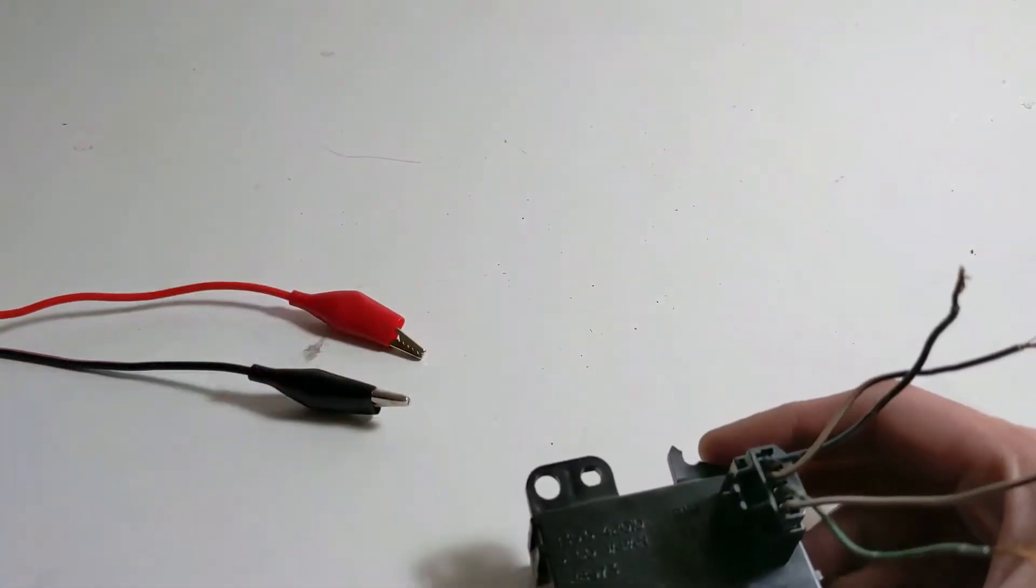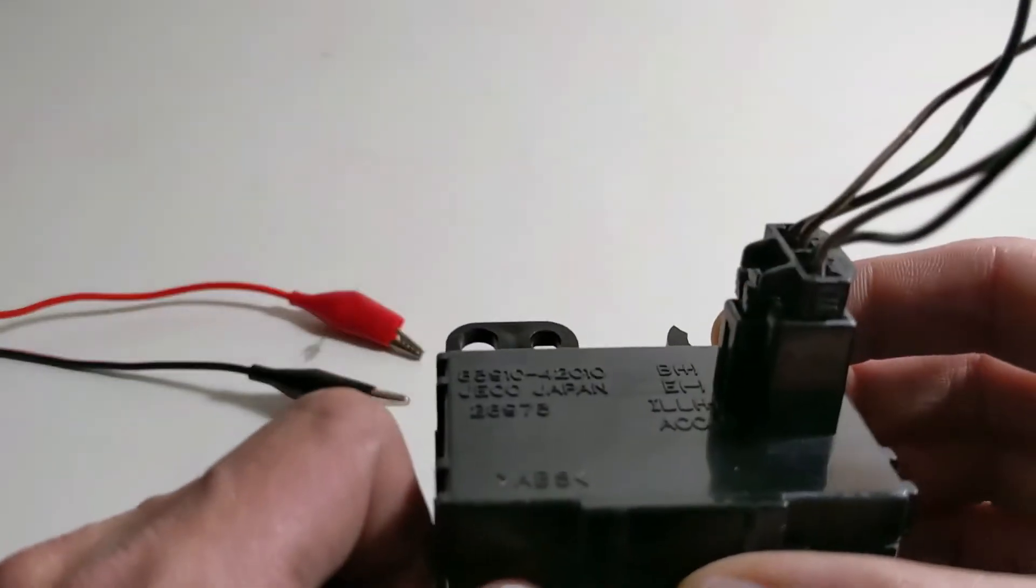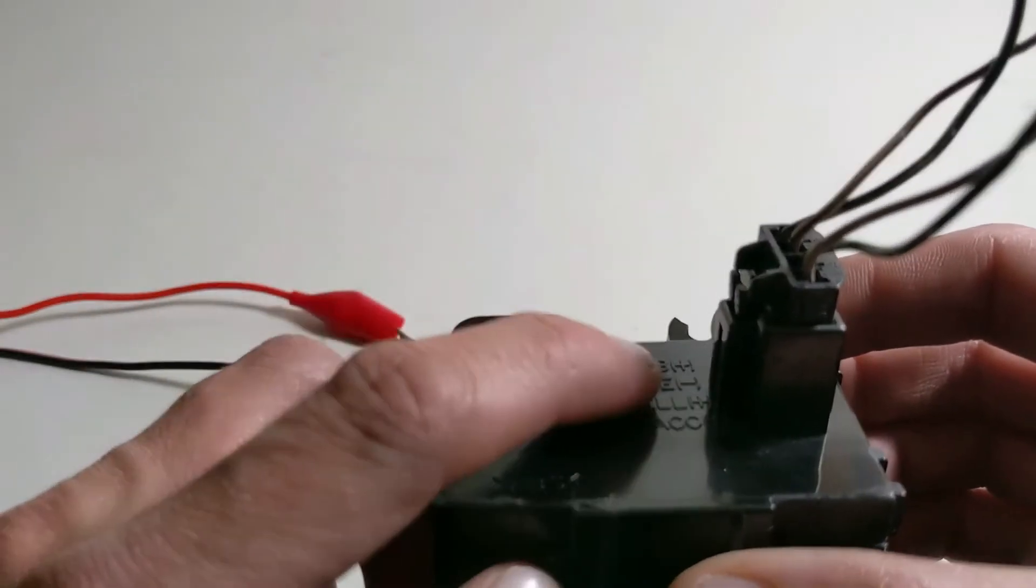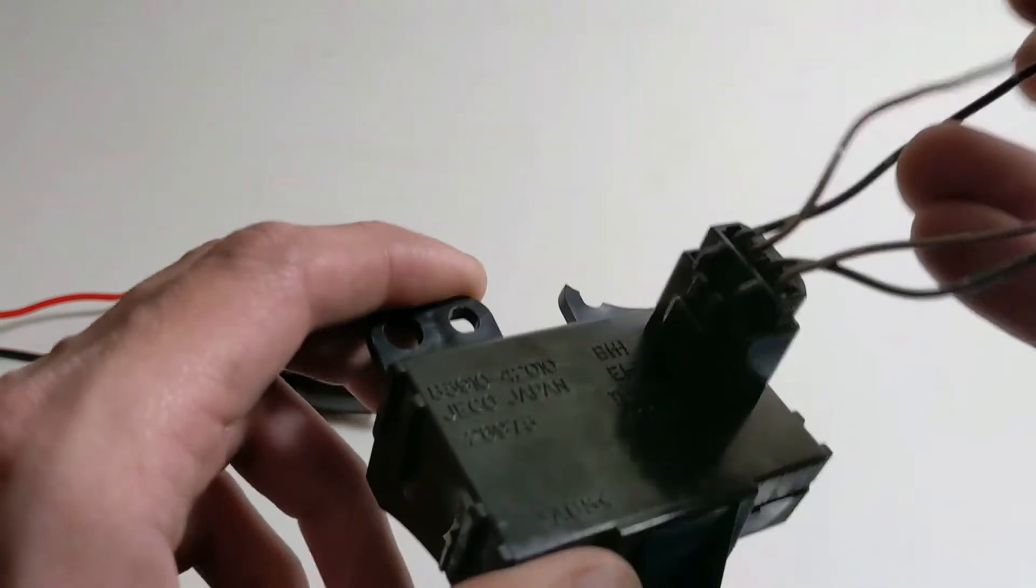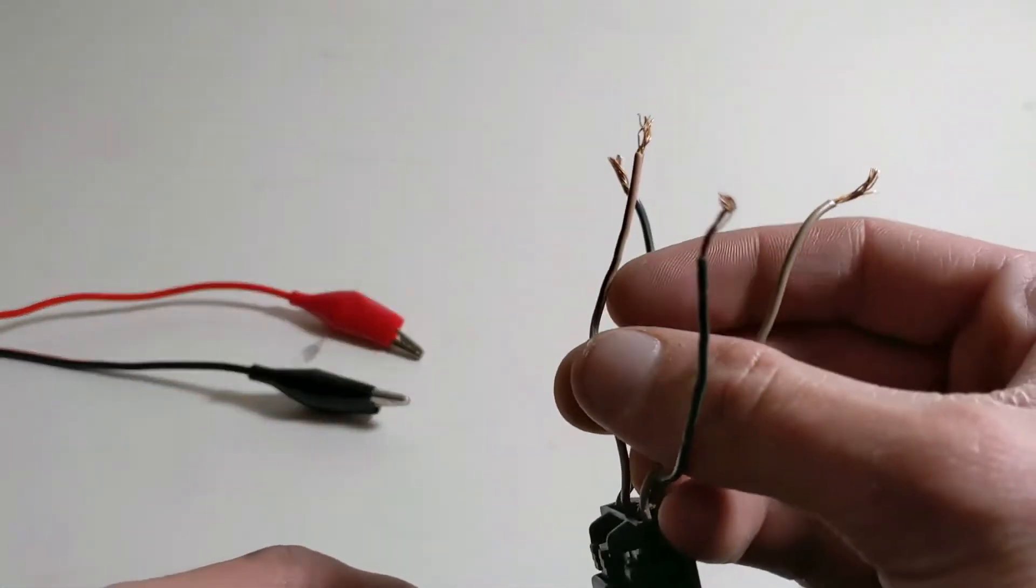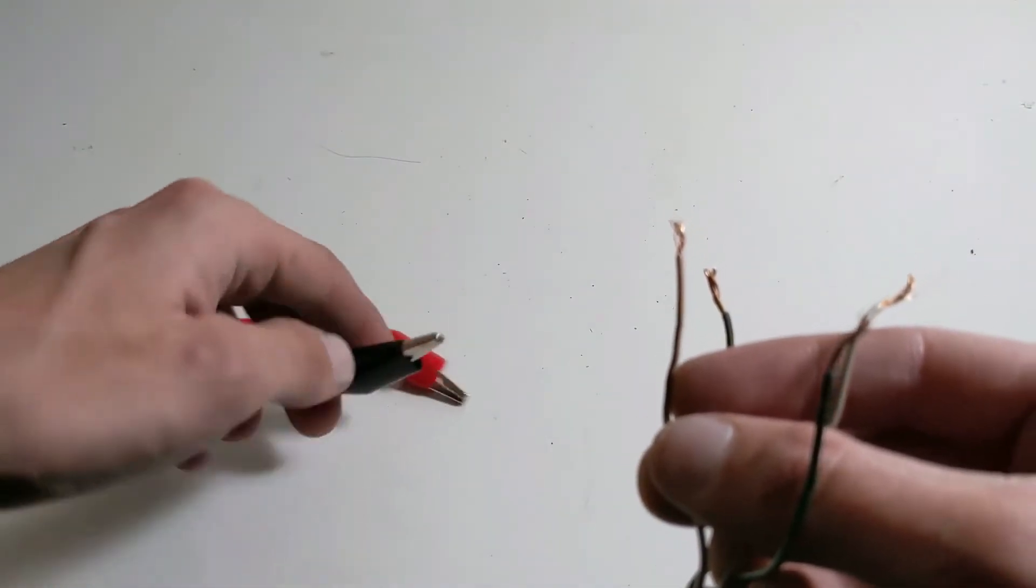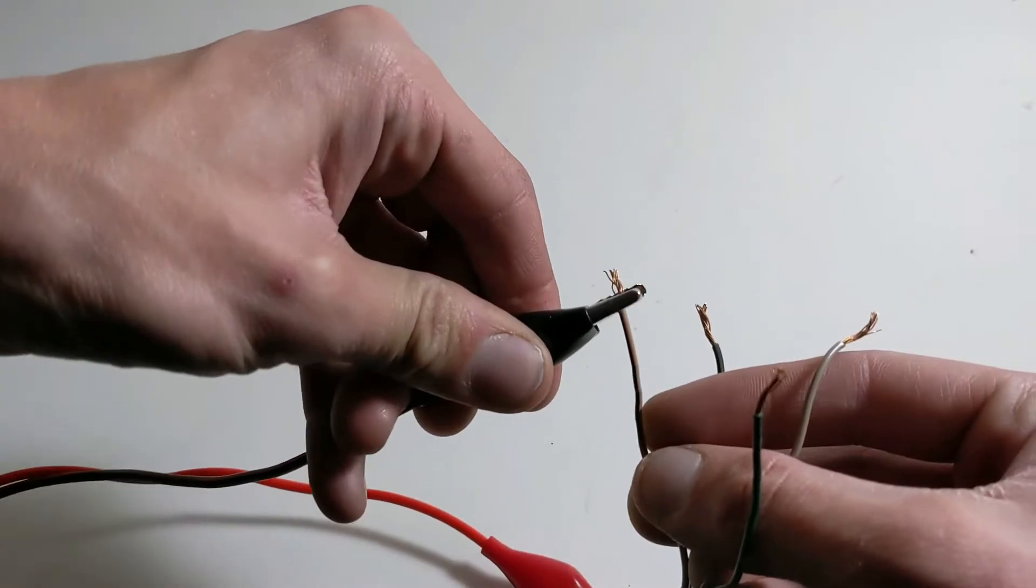So to wire it up, let's start with the E negative. So that's the second wire on the harness. Looking at the harness, as you can see, I've just taken some wire strippers and stripped off about half an inch. So this is the negative. So black goes to negative.